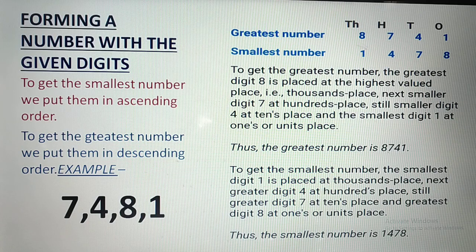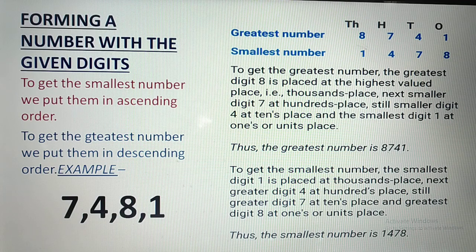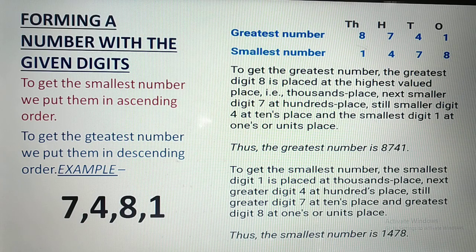Now, forming a number with the given digits. Agar aapko koi digits di jaati hain, unse aap greatest number aur smallest number kaise banayenge? To get the smallest number, we put the digits in ascending order — sabse chota number pehle rakhenge. To get the greatest number, we put them in descending order.